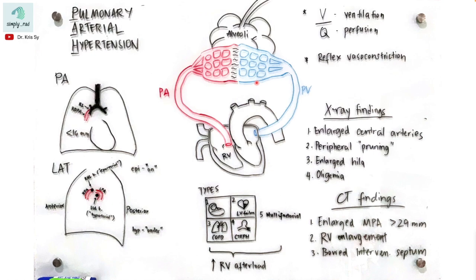Now that we understand why pulmonary arterial hypertension occurs, we better understand why the X-ray and CT findings appear this way. Aside from enlarged central arteries and enlarged hila, peripheral pruning occurs because of reflex vasoconstriction and arteriolar vessel remodeling. The smaller vessels in the periphery create increased peripheral resistance, and you will see oligemia — an apparent increase in lucency and decrease in vascularity.